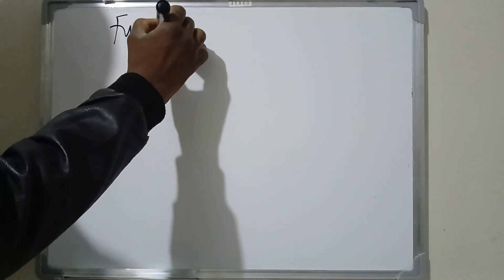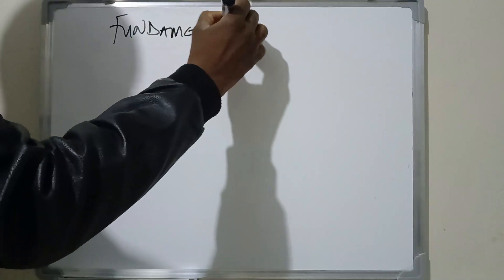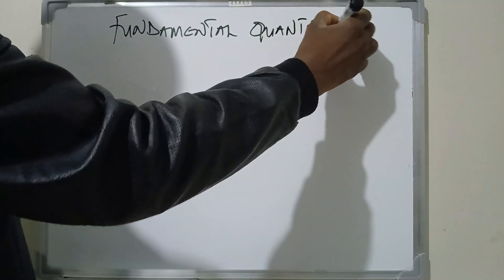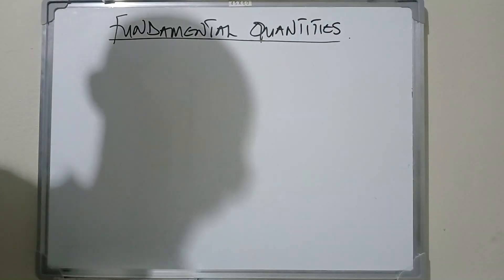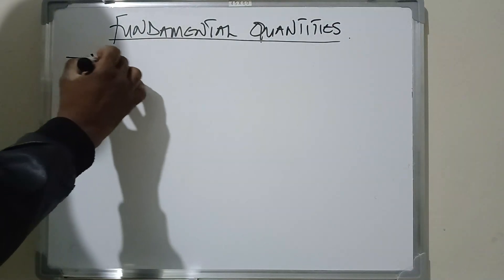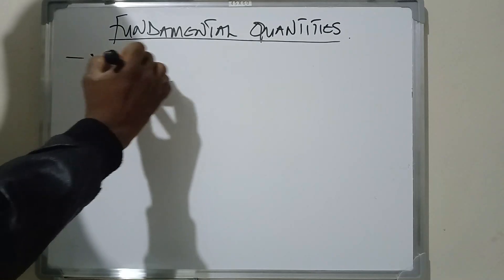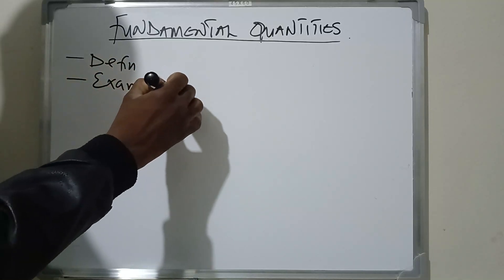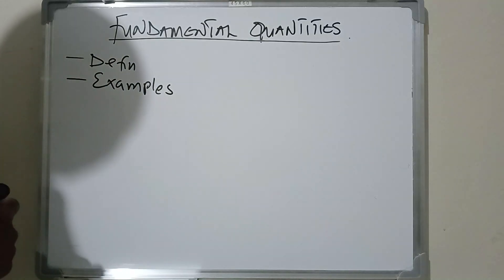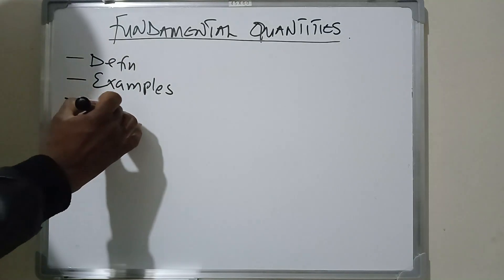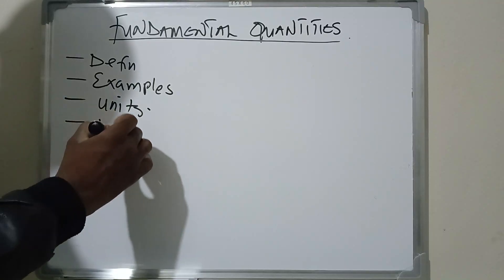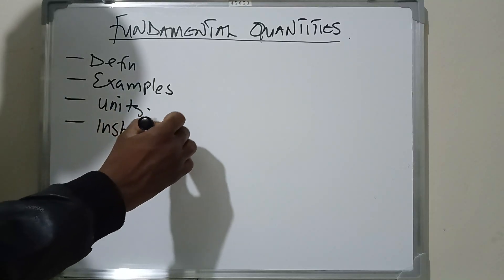Today we are looking at fundamental quantities, and we are also going to look at derived quantities. The first thing you need to know is the definition. You also need to know examples of both fundamental quantities and the derived quantities. You also need to know their units and the instruments that are used to measure them.